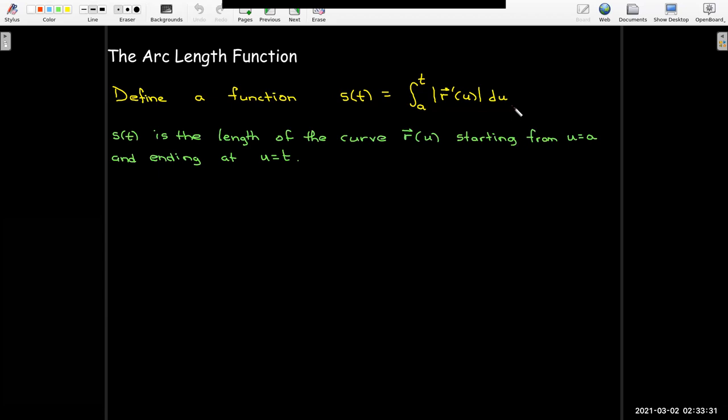So what does this tell me? Well, s of t is the length of the curve r of u starting from u equals a and ending at u equals t. And what will be useful for us to know is the derivative of this function. How does the arc length change with respect to t?